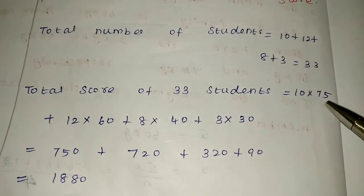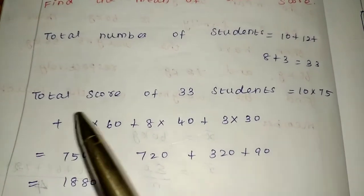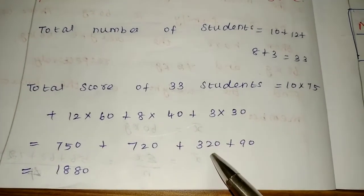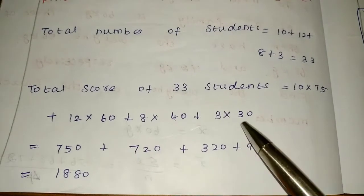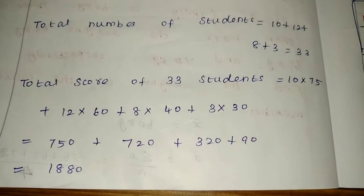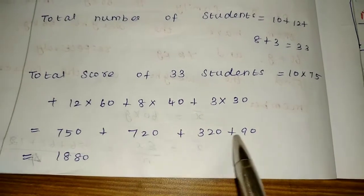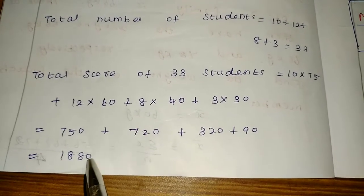So 10 into 75 is 750, 12 into 60 is 720, plus 8 into 40 is 320, plus 3 into 30 is 90. So the total is 1880. Total score is 1880.